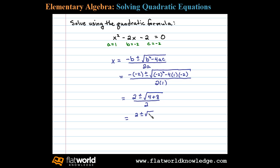Now the square root of 12 simplifies. 12 is 4 times 3, so we can simplify the square root of 12 to 2 square root of 3 divided by 2.